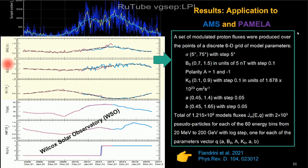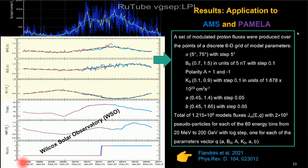Here are our three free parameters (k-zero, a, b) and the other three parameters from observations: tilt angle, magnetic field, and polarity, showing how they evolved over time. The observationally-derived parameters come from solar observatories, while k-zero, a, and b are determined by fitting for each month from 2005 to 2017 covering AMS and PAMELA. From this we can derive the propagation time for each time unit.